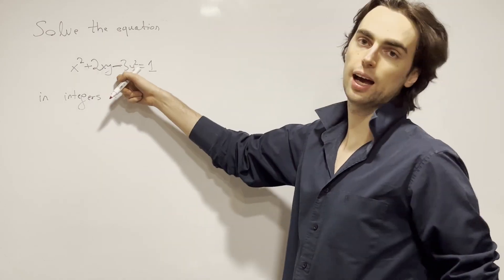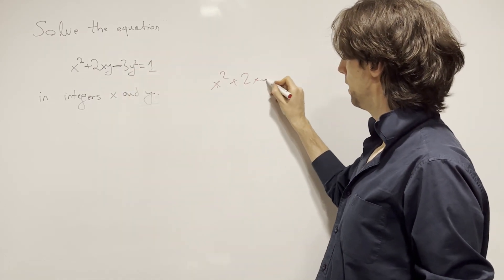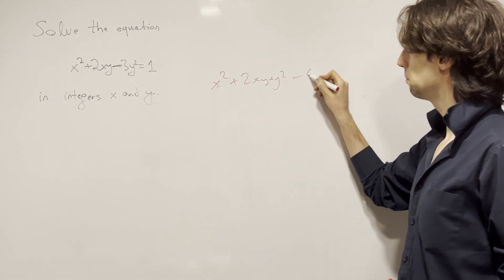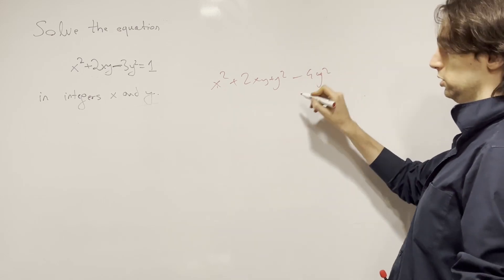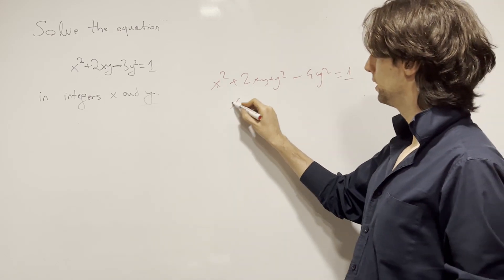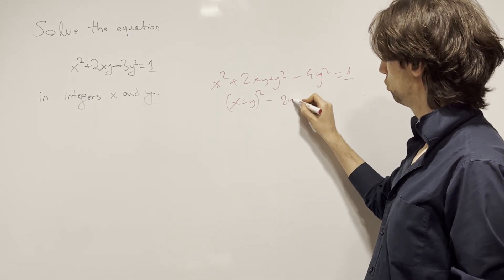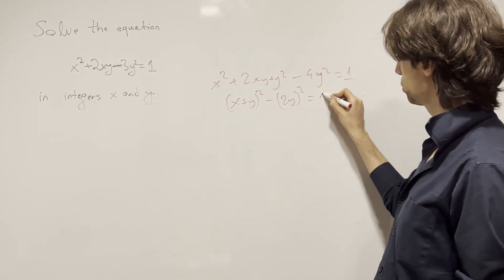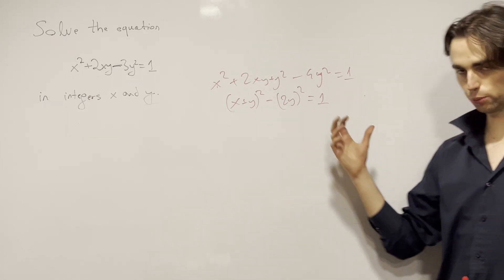To complete the square I need to add y squared and subtract y squared, and so this is equal to plus y squared minus 4y squared, because I've added a y squared I need to subtract 1, is equal to 1, and then this becomes (x + y)² - 2y² = 1. That's just another way of writing it out, and what do we do with this?